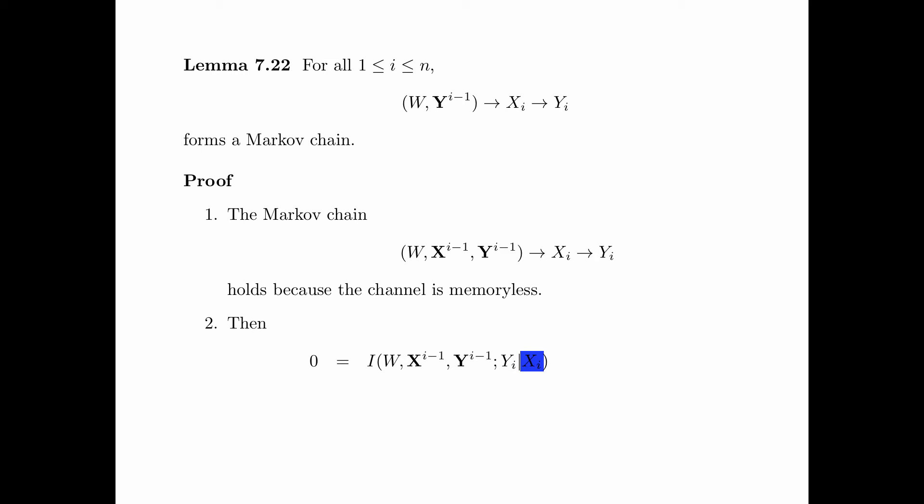By means of the chain rule, we can expand this mutual information into the sum of two mutual informations. First, the mutual information between W, Y^(i-1) and Y_i. And second, the mutual information between X^(i-1), Y_i, conditioning on W and Y^(i-1).